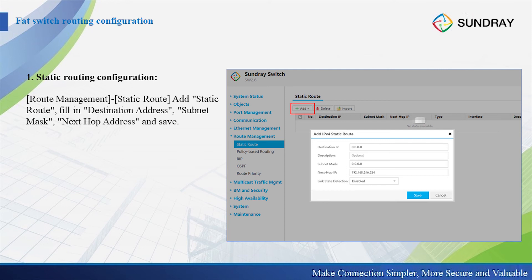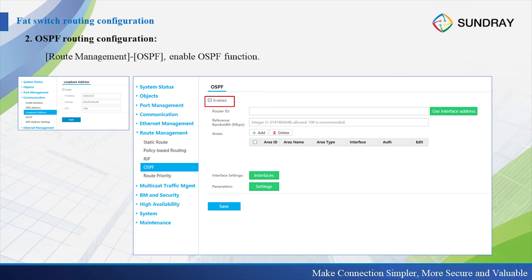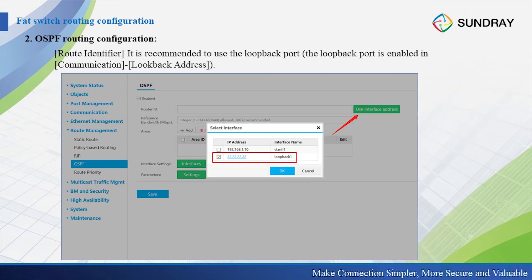The second is the OSPF routing configuration. For example, there is a topology where the network controller connects to the RS switch 1, and the loopback is the SAP address. To configure the OSPF for area 0 and area 1, we go to the web interface management, then route management, and go to OSPF to enable OSPF first. Then use the interface address to select the interface. The loopback address is 8.2.